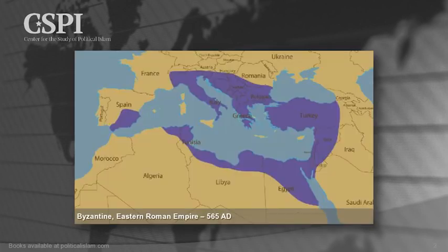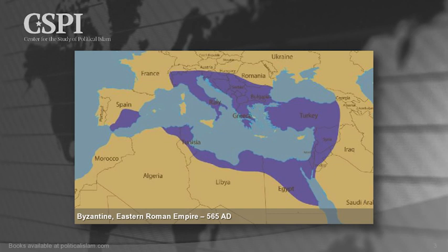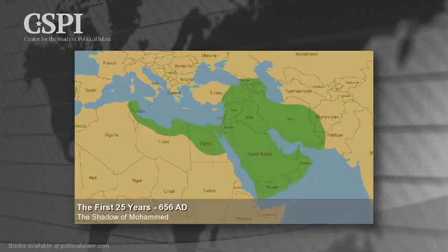On our next slide, we see that before — this is a map of the Byzantine Empire about the time that Muhammad's descendants, the Muslims, were going to burst out of Arabia and invade the classical world. This was what the classical empire looked like when the fall of Rome happened and it was being re-established. This is the Byzantine Empire.